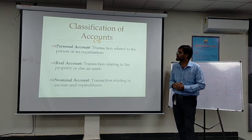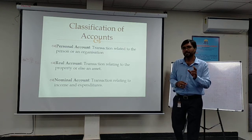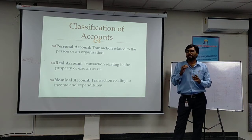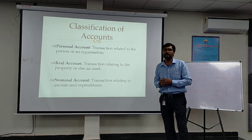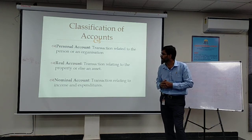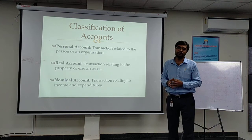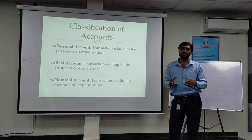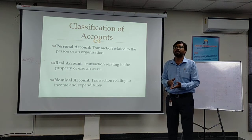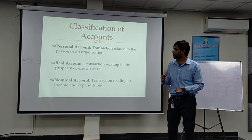Classification of accounts — we have three types: personal account, real account, and nominal account. Personal account deals with the name of a person or an organization. Real account deals with properties or assets — for example, machinery or a building would be considered under the real account. Nominal account is a type of fictional account that considers income and expenditures — for example, interest received is income, and salary paid is an expenditure.